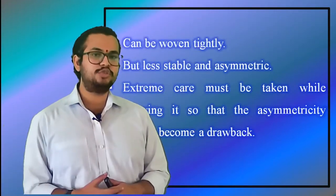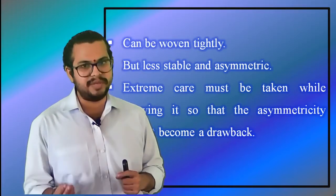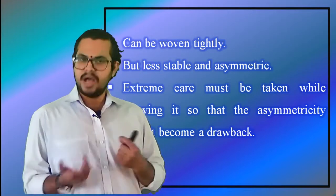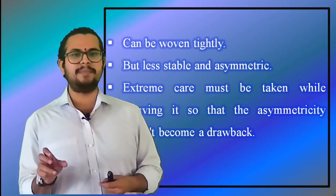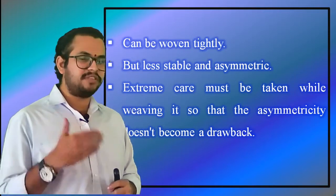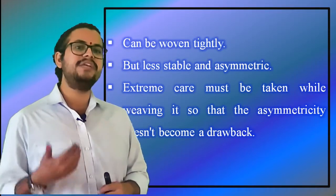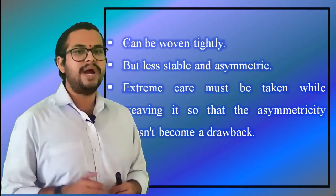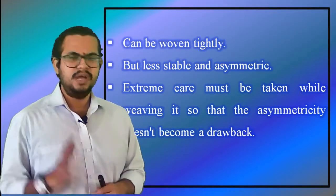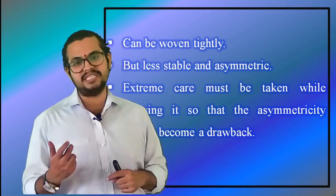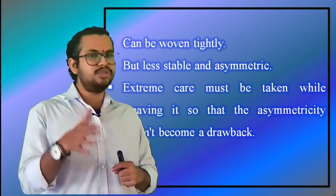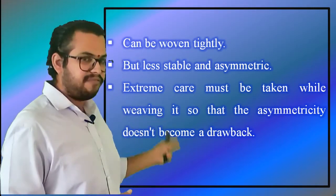Satin weaves allow fibers to be woven in the closest proximity and can produce fabrics with a close, tight weave. However, the style's low stability and asymmetry needs to be considered. The asymmetry causes one face of the fabric to have fibers running predominantly in the warp direction, while the other face has fibers running predominantly in the weft direction. Care must be taken in assembling multiple layers to ensure that stresses are not built into the component through this asymmetric effect.